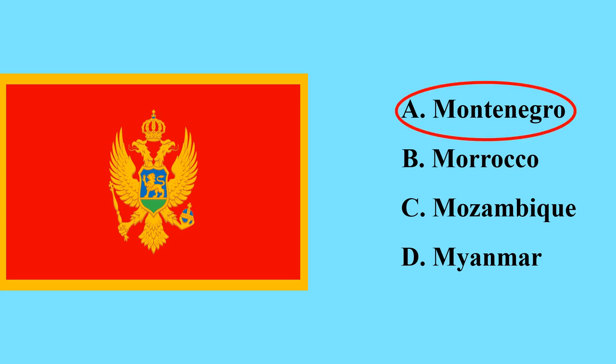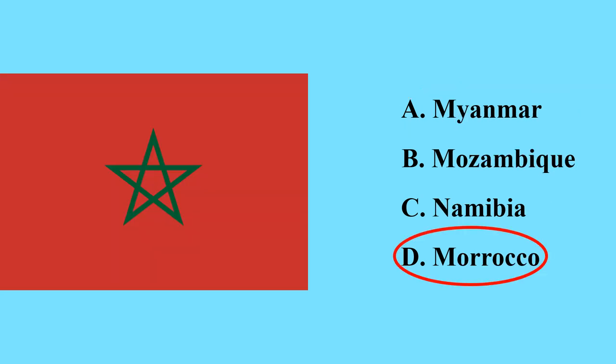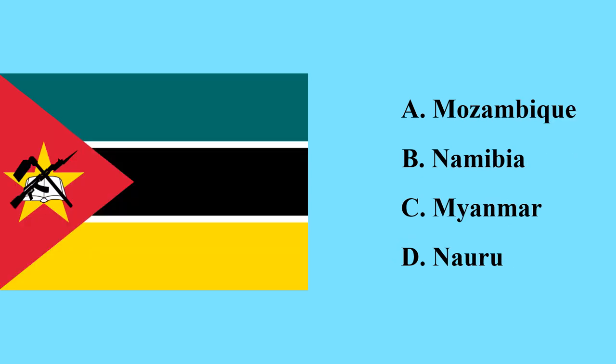This is the flag of Mongolia, a country in East Asia which has land borders with Russia and China. This is the flag of Montenegro in the Balkan region in Europe. This is the flag of Morocco, a North African country.